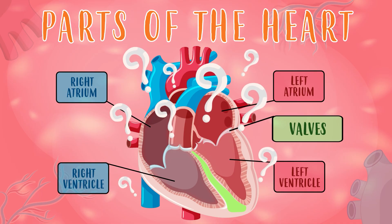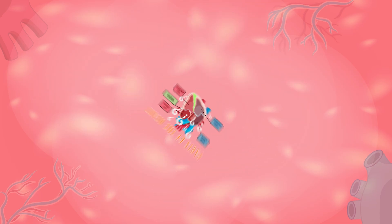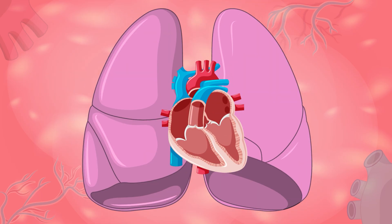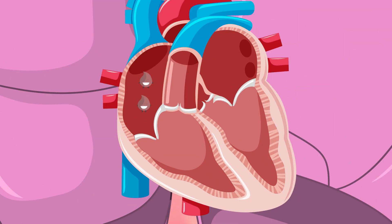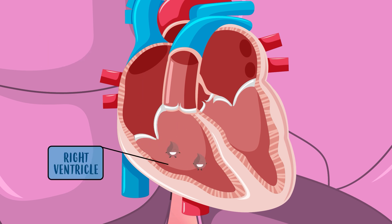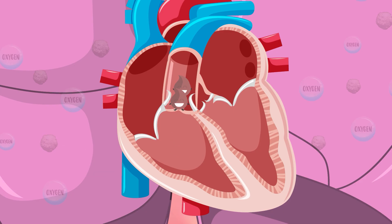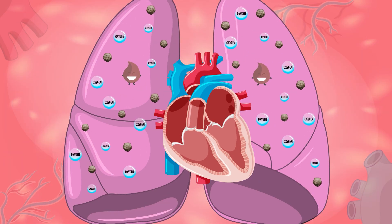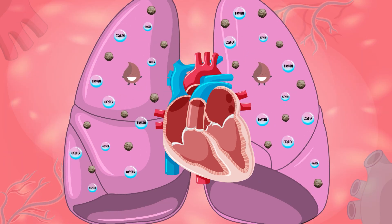Now that we know the most important parts of the heart, let's learn how it works. It all commences in the right atrium, where deoxygenated blood — meaning it has very little oxygen and nutrients — enters the heart. Then it goes through the first valve up to the right ventricle.